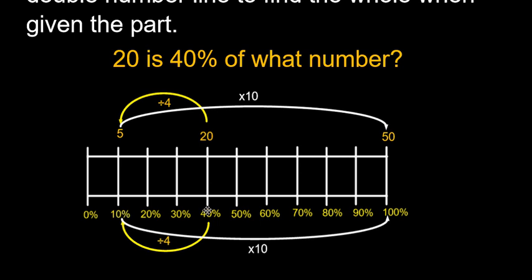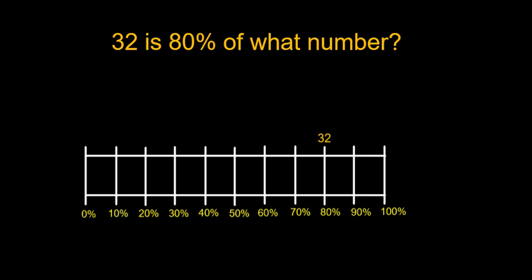So we're going to use this double number line approach to help understand and solve a variety of problems. I know some of you are looking at this and you're saying, well, couldn't you take 40% divided by 2 to get 20%? And 20 divided by 2 is 10. And then you could add 40 plus 40 is 80%, which would be 40. And there are a lot of different ways to put numbers together, but our main focus initially is going to be to find 10% of the number and then multiply it by 10.